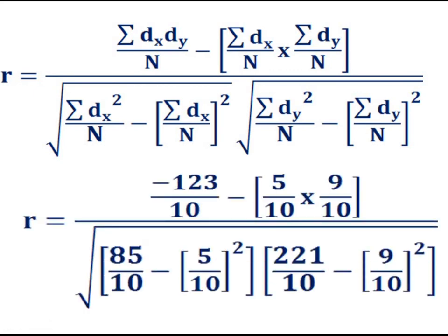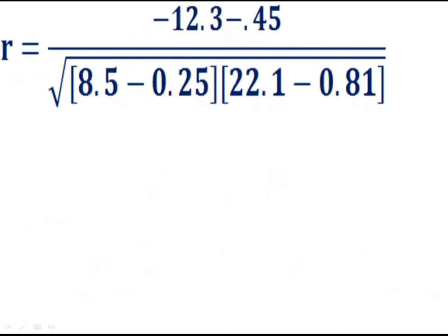Substituting: minus 123 divided by 10, minus (5 divided by 10) into (9 divided by 10), divided by square root of (85 by 10 minus (5 by 10) squared) into (221 divided by 10 minus (9 by 10) squared). We get: r equals minus 12.3 minus 0.45, divided by square root of (8.5 minus 0.25) into (22.1 minus 0.81). That is minus 12.75 divided by square root of 8.25 into 21.29.